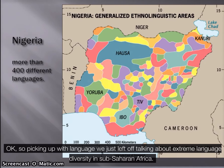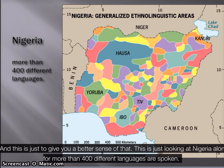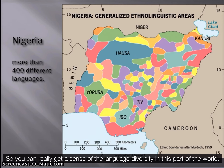Picking up with language, we just left off talking about extreme language diversity in Sub-Saharan Africa. This is just to give you a better sense of that — looking at Nigeria alone, where more than 400 different languages are spoken. So you can really get a sense of the language diversity in this part of the world.